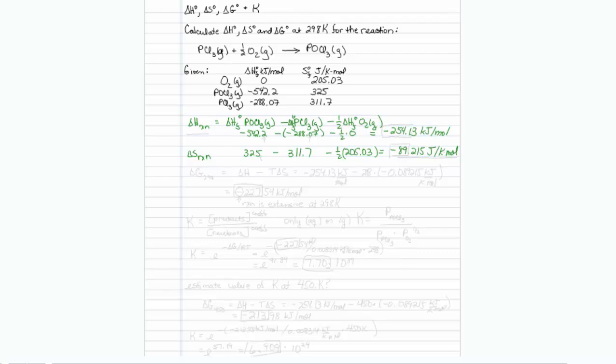Now if we had the values for the free energies of formation, we could use the same formula, or we could use the free energy formula, which tells us that delta G at some temperature is equal to delta H minus T delta S.